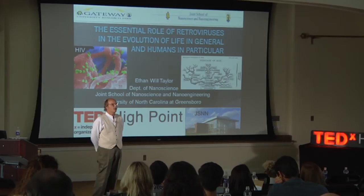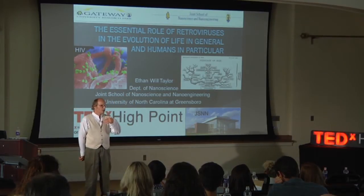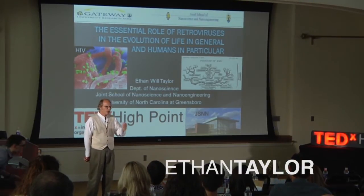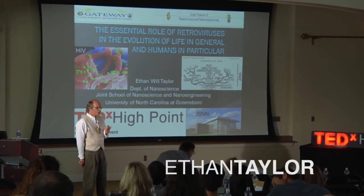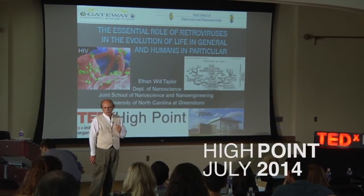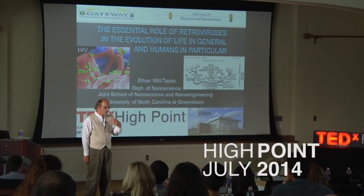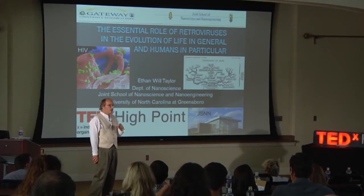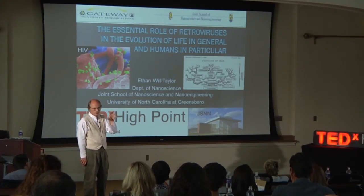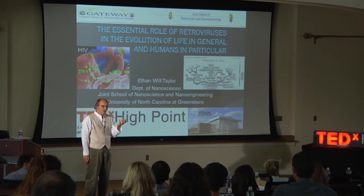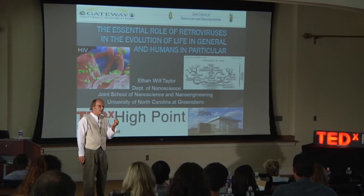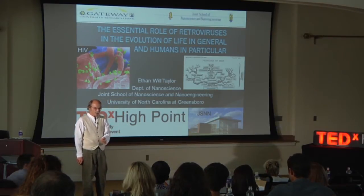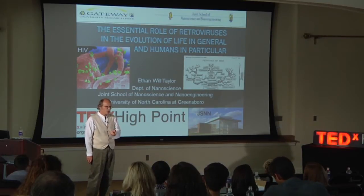Usually when people talk about viruses and evolution, they talk about things like virus resistance genes and the arms race between the host and the virus. I'm going to take a somewhat different tack, really looking at some of the unique properties of retroviruses like HIV, by which they can make a DNA copy of their RNA genome and insert it into the host chromosome. And if that happens in a germline cell, like an egg or a sperm, there's a potential that DNA can be passed down through descendants — that forms what we call an endogenous retrovirus.